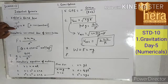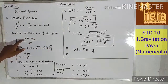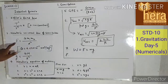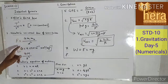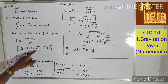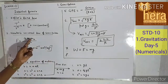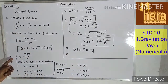Newton's Universal Law of Gravitation: F is equal to G times M1 times M2 upon d squared or r squared — that is the force between two masses M1 and M2. G is the universal gravitational constant; its value is 6.67 × 10⁻¹¹ Newton meter squared per kg squared. M1 and M2 are the masses of the objects, and d is the distance between them.